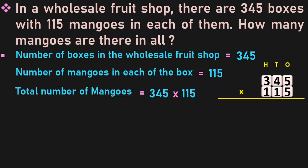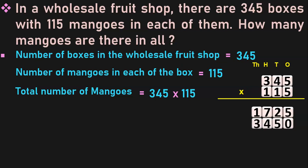5 into 5 is 25; 5, carry over 2. 5 fours are 20; 20 plus 2 is 22; 2, carry over 2. 5 into 3 is 15; 15 plus 2 is 17; 7 and 1 will move to the thousands place. Now multiply 345 by 10, because 1 is in the 10's place, so add a 0 in the 1's place. 1 into 5 is 5; 1 into 4 is 4; 1 into 3 is 3.